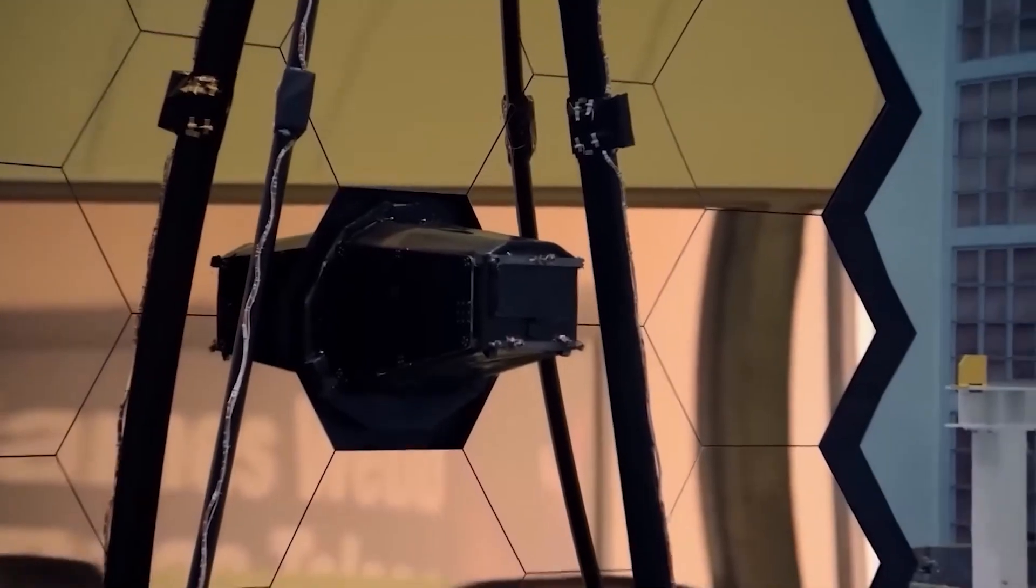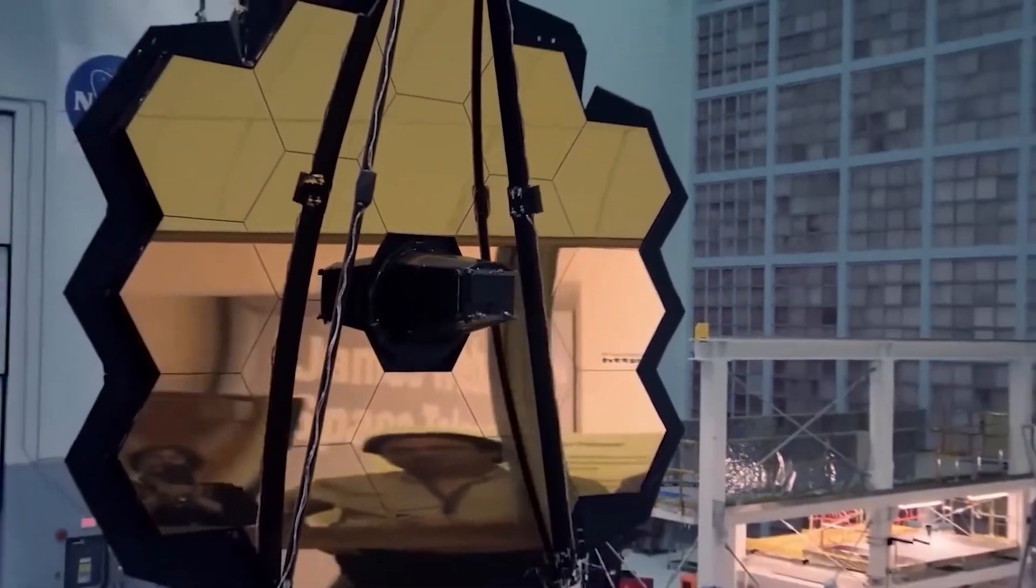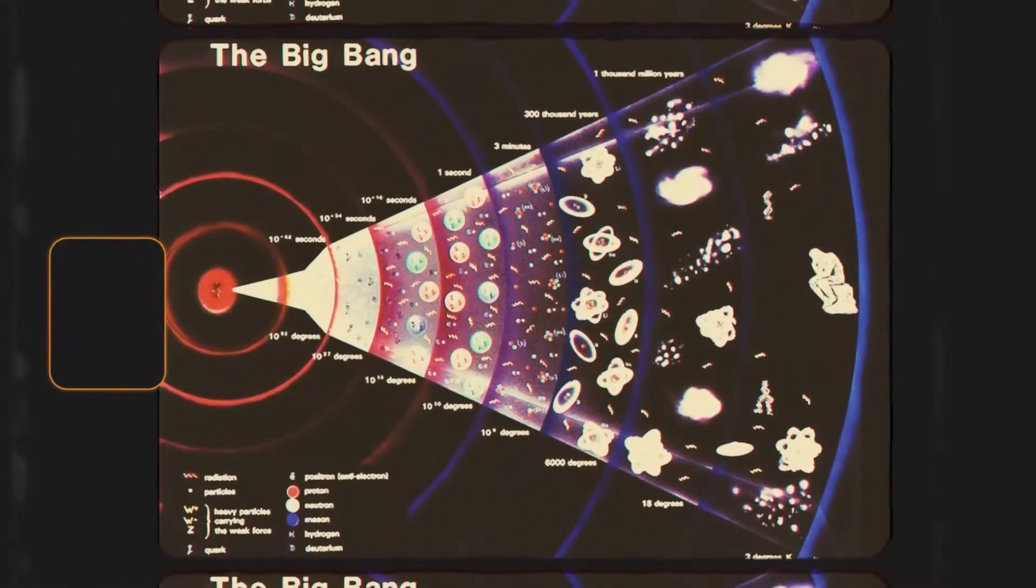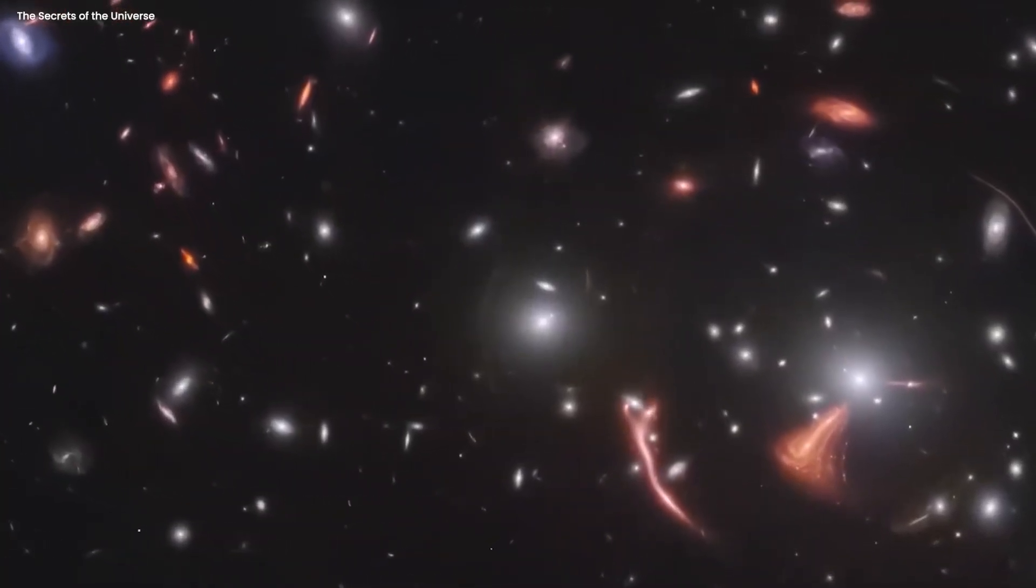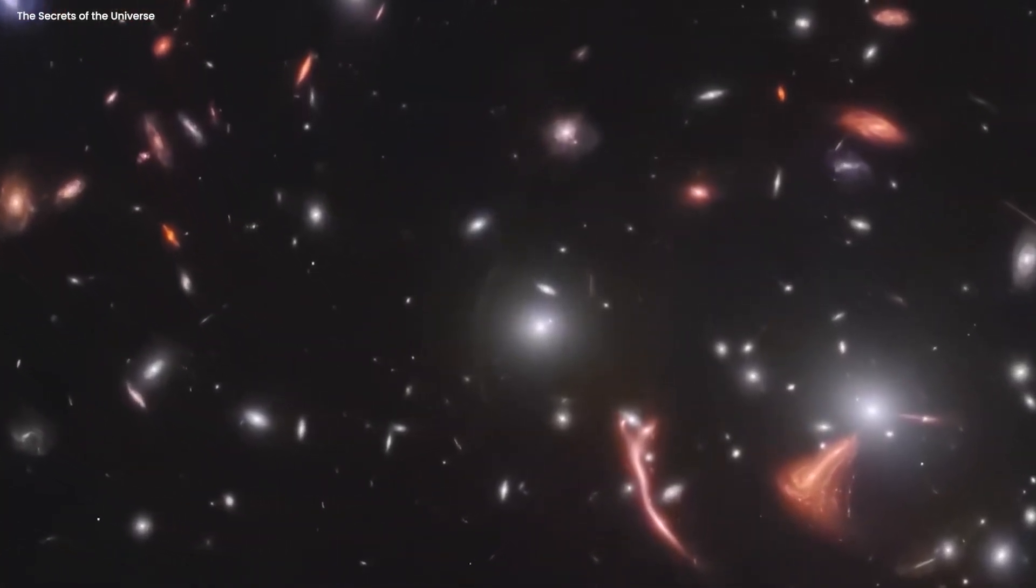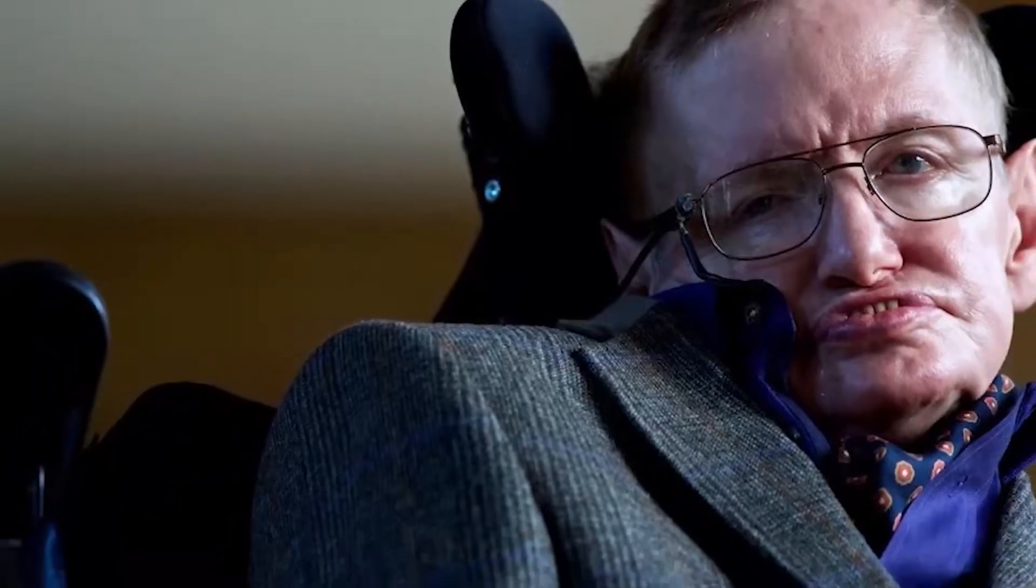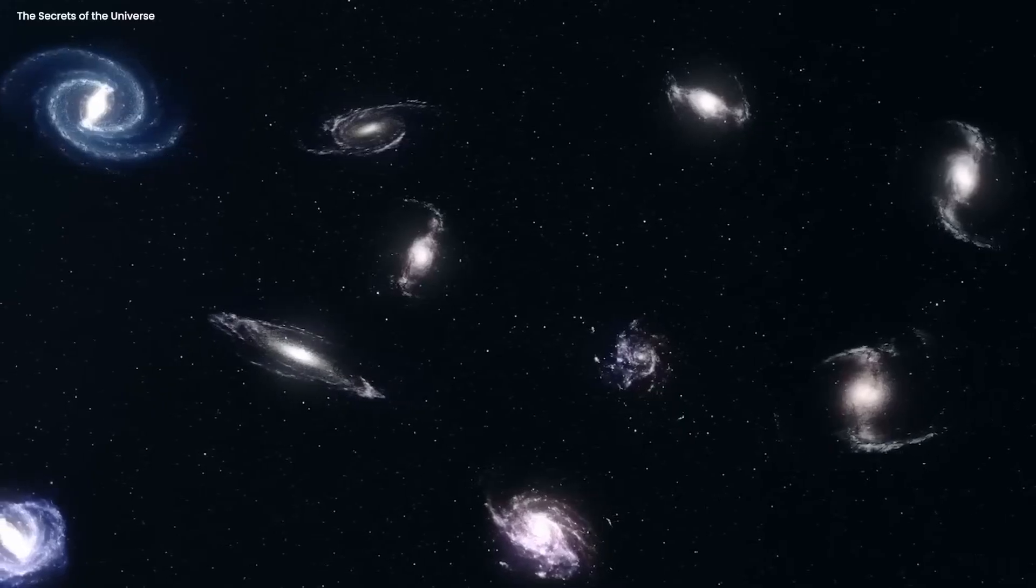We know that the JWST detected highly evolved galaxies just 325 million years after the Big Bang, but these galaxies have prompted a radical hypothesis among cosmologists. One cosmologist is saying that the universe may be twice as old as we thought it was. So did Gupta have sufficient evidence to support his claim?